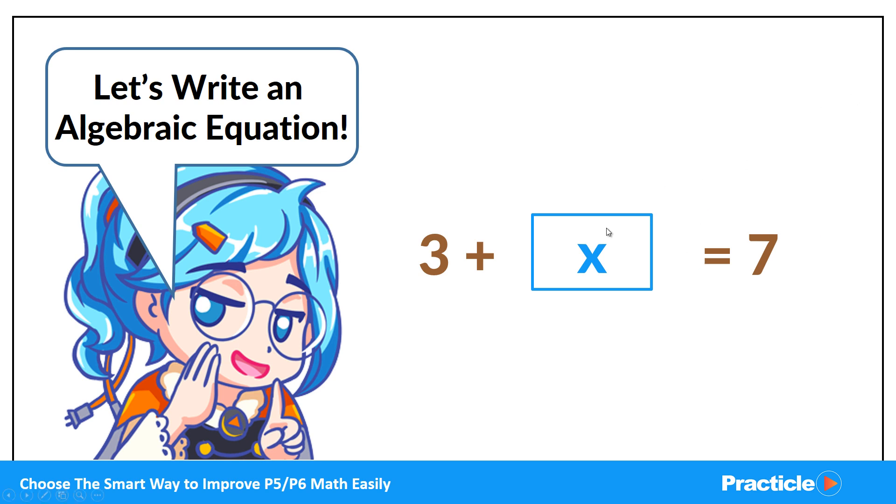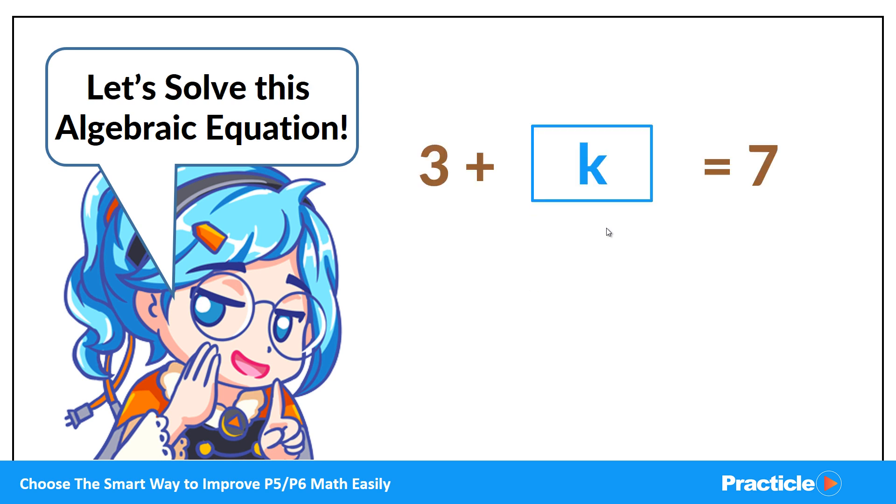So this works too if we were to replace X with Y, or if we were to replace this Y by another letter, let's say K. Now that we have an algebraic equation, the next step will be to solve it. Since the numbers here are pretty small, it's easy to tell that 3 plus K equals 7, this K must be 4.